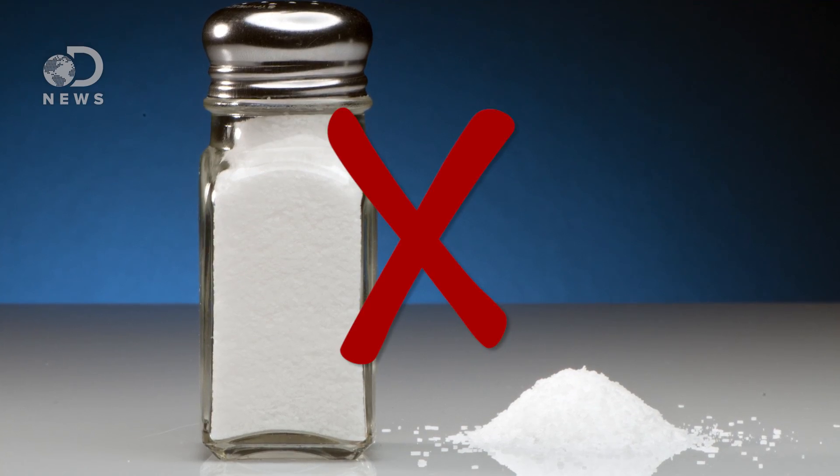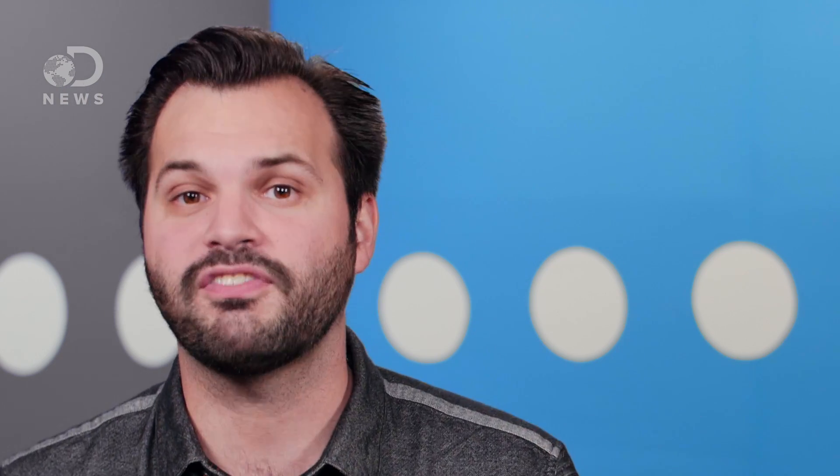But companies have a weapon against rainbow tables, it's called salt. Not like literal salt, it's basically taking random chunks of code and tossing them into that hashed password. As our AP Donna says, it changes the flavor. If salted hashes are found, the rainbow tables are useless because they're never going to find a match.